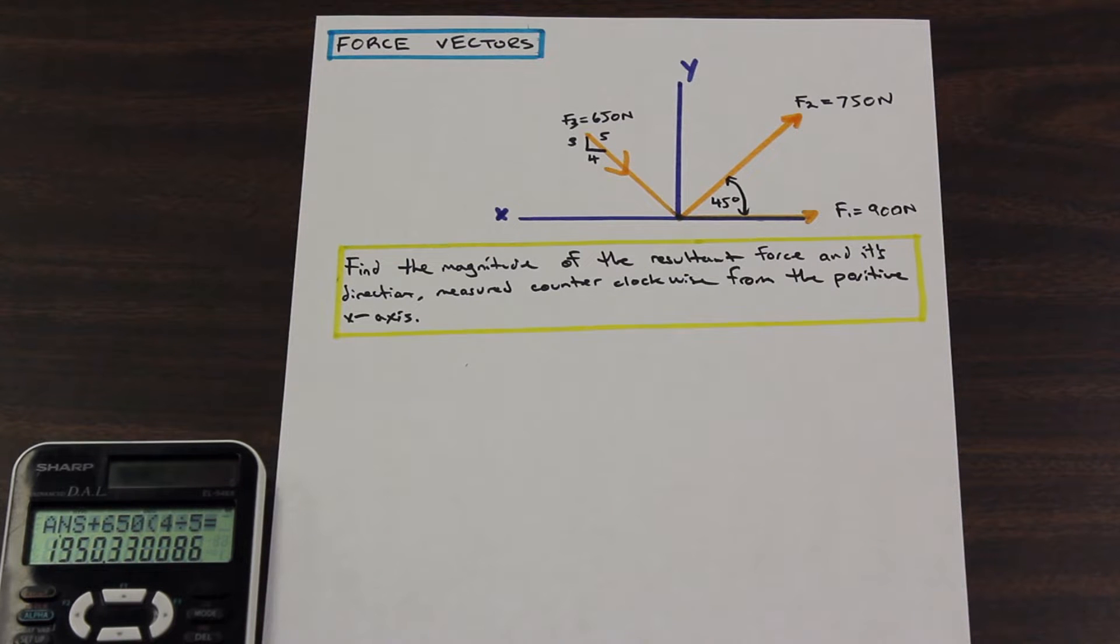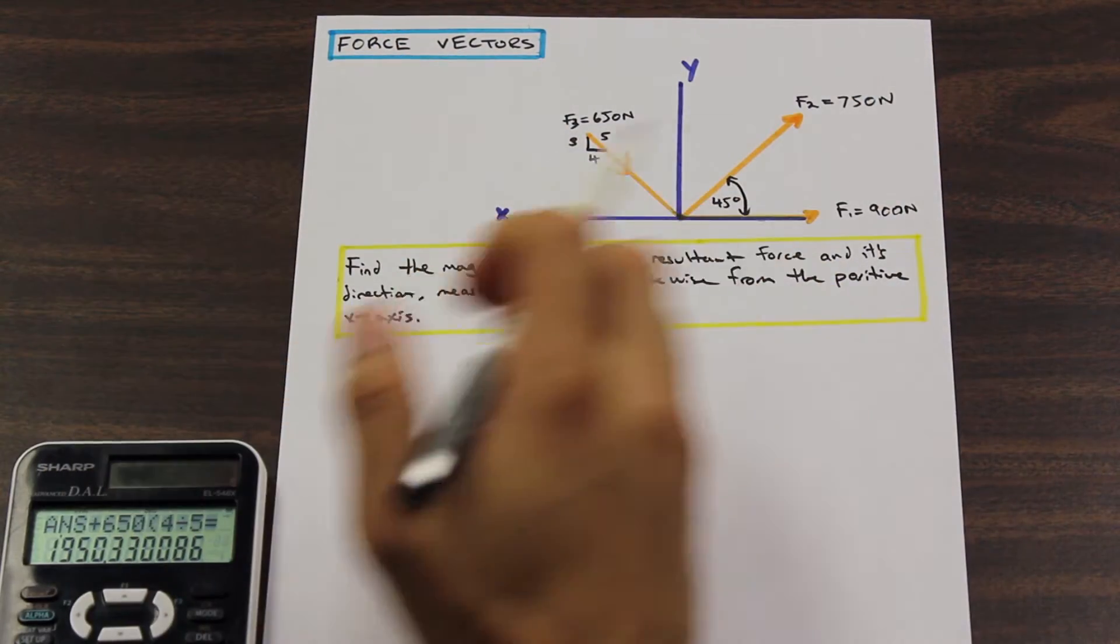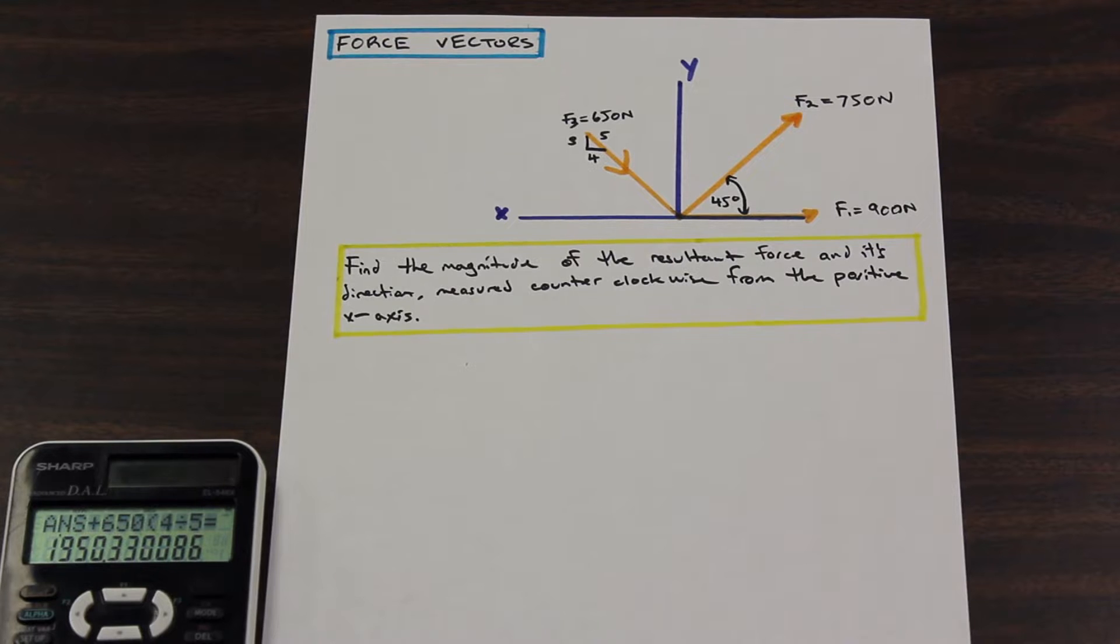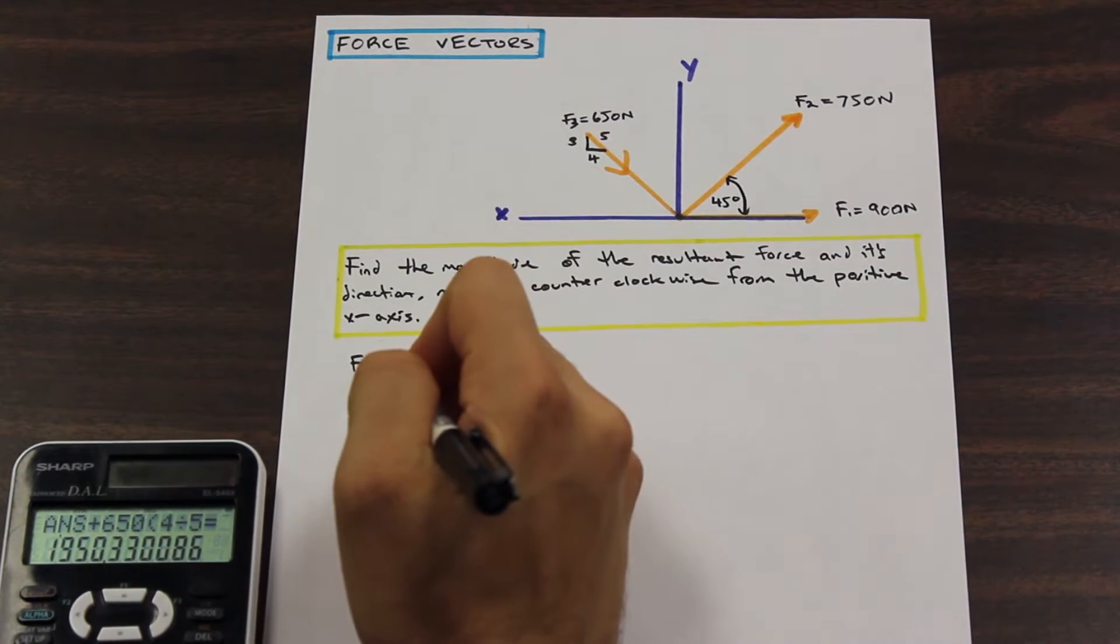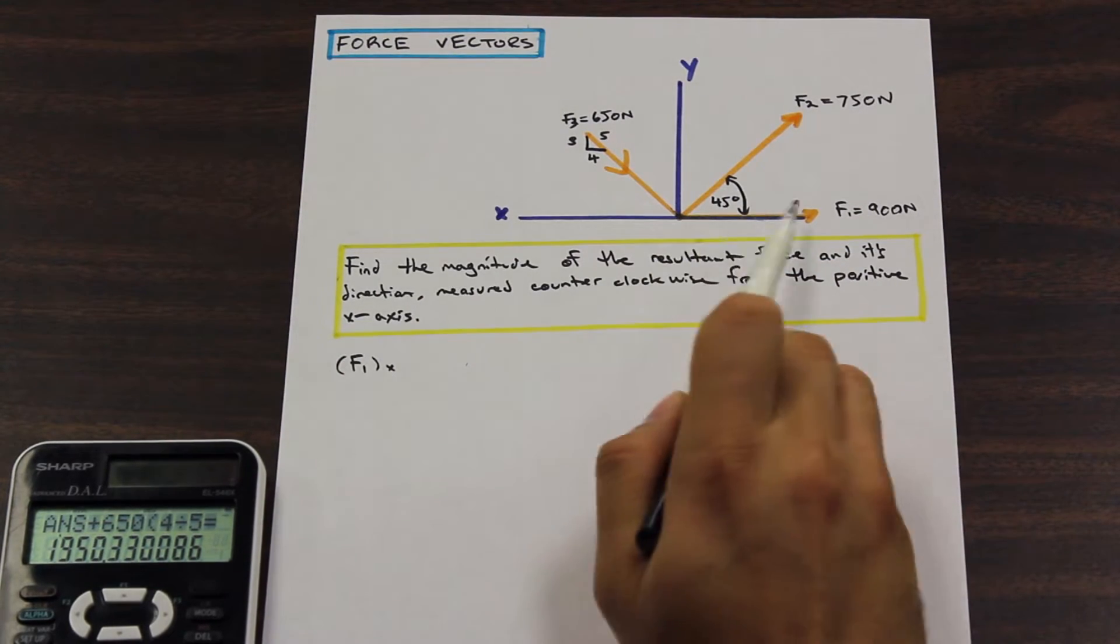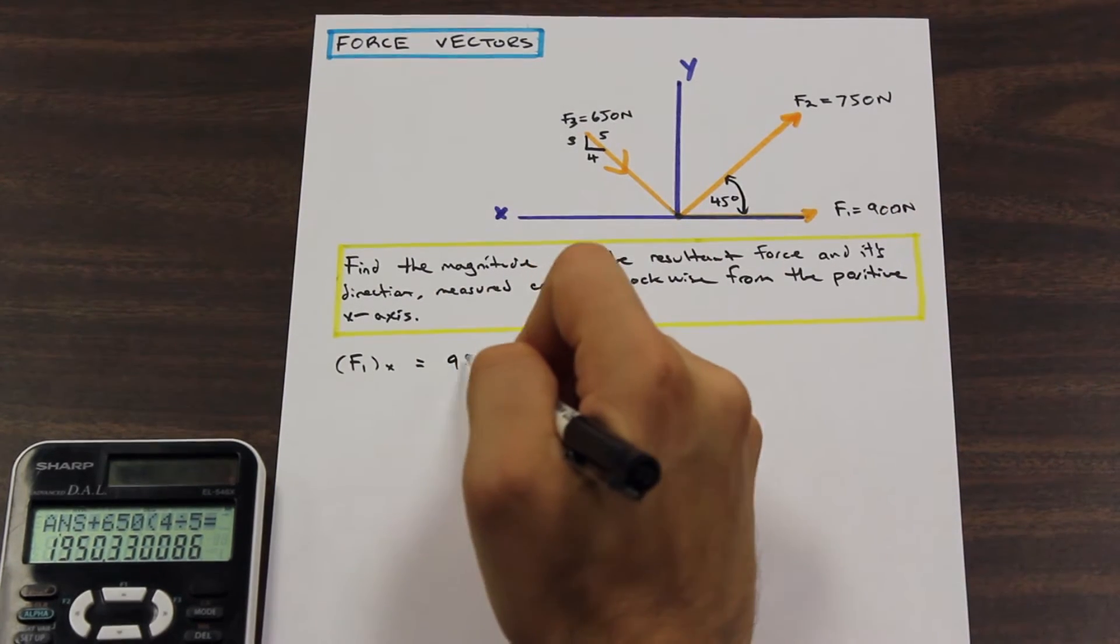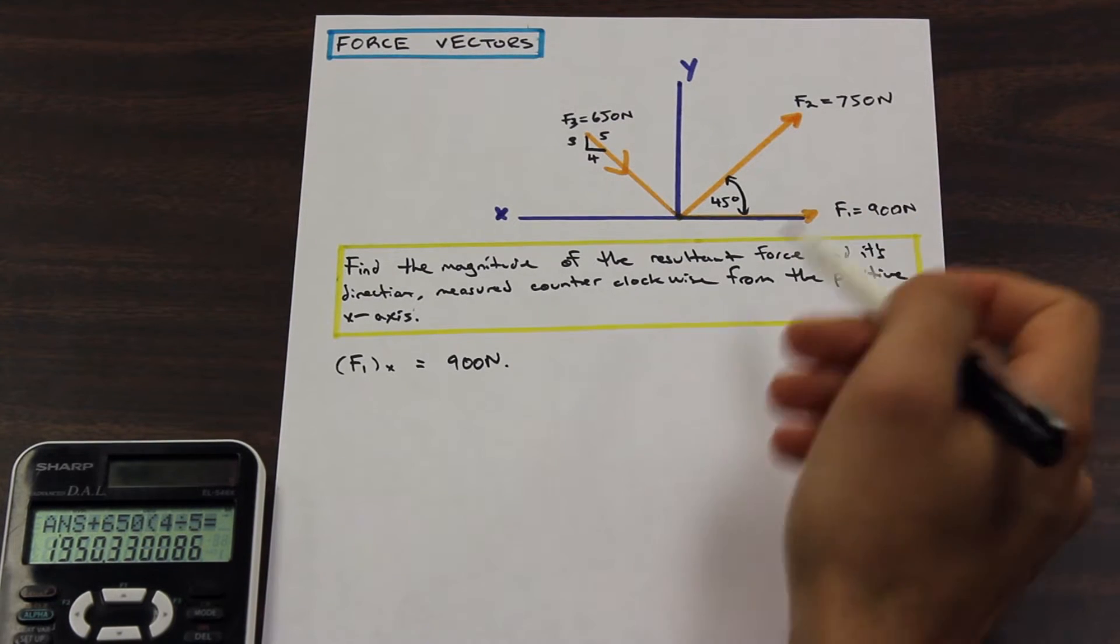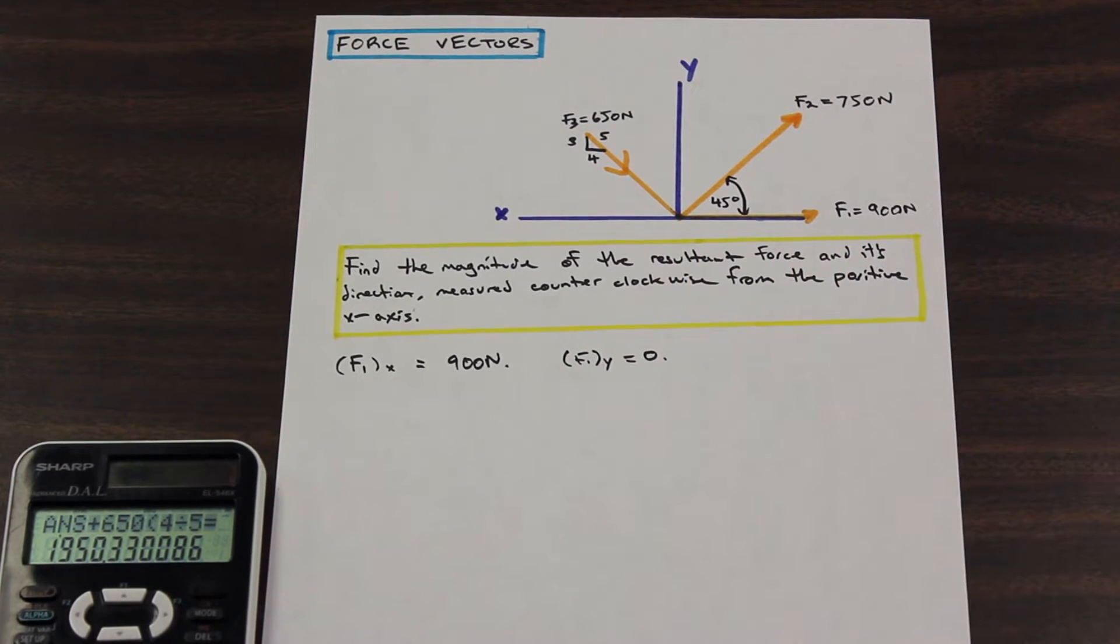We're going to do this one slightly differently. I'm going to calculate each force and show you its x and y component. We're going to write both of those out, and at the end, we're going to sum all the x's and all the y's to get the resultant force. Then we'll find the angle. Let's start with F1. For the x component of F1, as we can see, F1 is on the x-axis in the positive direction, so that's simple. The x component of F1 equals 900 newtons. And because F1 is only on the x-axis, there's no y component, so F1 in the y direction equals 0.